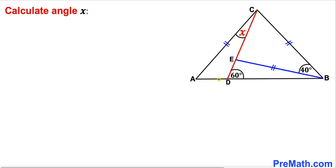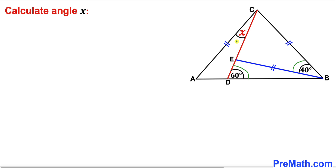Welcome to pre-math. In this video we have got this big triangle ABC such that we have these three triangles stacked inside this one, as you can see in this diagram. Moreover, these side lengths AC, BC, and EB are equal in length. Furthermore, this angle BDC is 60 degrees and this angle EBC is 40 degrees, and now we are going to calculate this angle X.